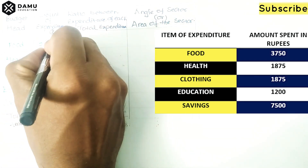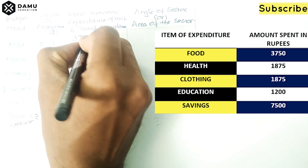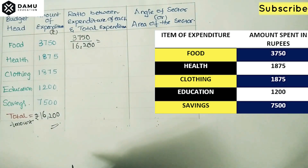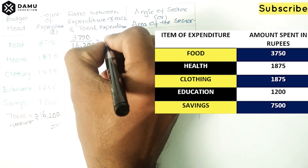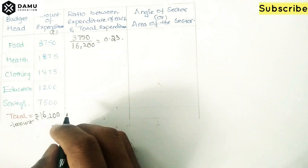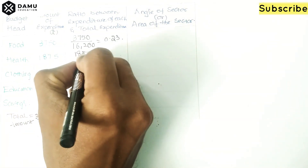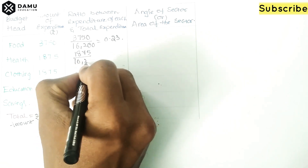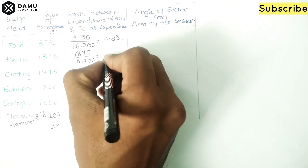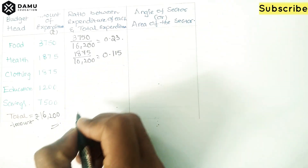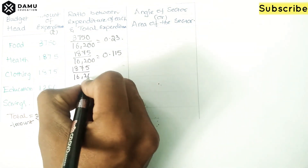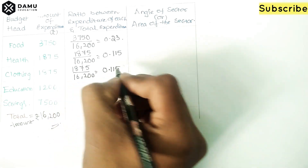Now we write the ratio between each item's expenditure and the total. For food: 3,750 divided by 16,200 gives approximately 0.23. For health: 1,875 divided by 16,200 gives approximately 0.115. For clothing: 1,875 divided by 16,200 also gives 0.115.